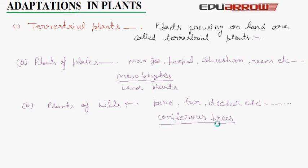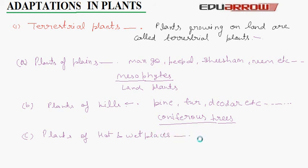The third type of terrestrial plants is plants of hot and wet places. Plants that grow in coastal areas are adapted to hot and wet climates. Examples include coconut, rubber, and pepper. These trees are evergreen trees.